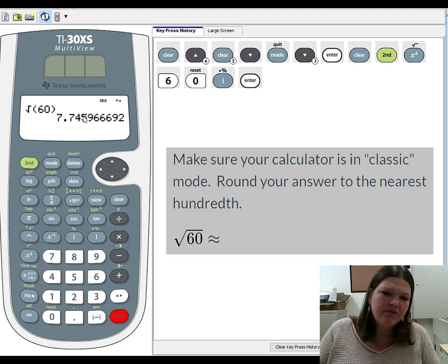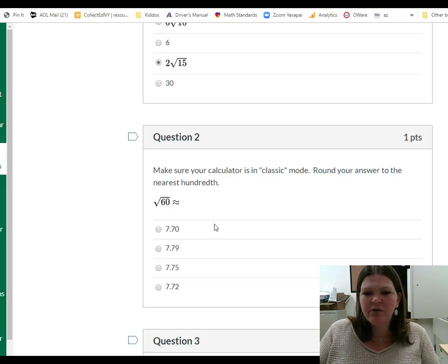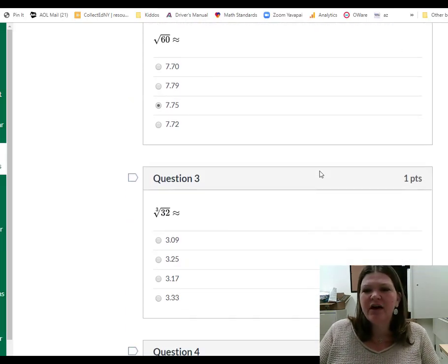Let's see. That's a 4. So I'll round it. I'll call it about 7.75. So let's come back to our quiz. There's 7.75. Wonderful.